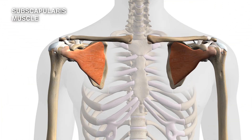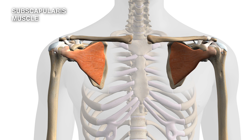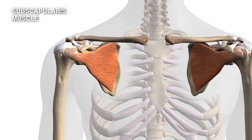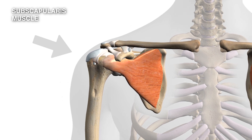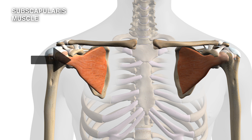The subscapularis muscle arises from the inner or medial edge of the scapula in the front, and it runs across the front of the scapula in between the scapula and the ribs. It then curves around the front of the humerus and attaches to the lesser tubercle on the humerus. Importantly, when the subscapularis contracts it pulls the head of the humerus into the glenoid fossa, making it an incredibly important stabilizer of the head of the humerus.